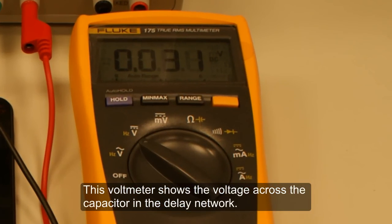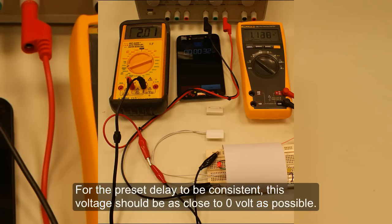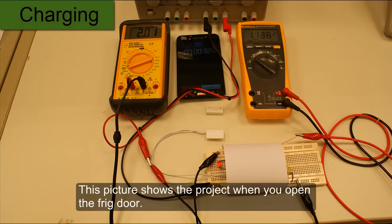This voltmeter shows the voltage across the capacitor in the delay network. For the preset delay to be consistent, this voltage should be as close to zero volts as possible. This picture shows the project when you open the fridge door.